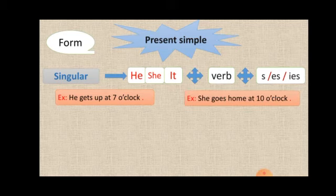The next example: She goes home at 10 o'clock. The verb go, we add es because it ends by o. Verbs that end by o or s or ss or ch or sh, I add es to it.